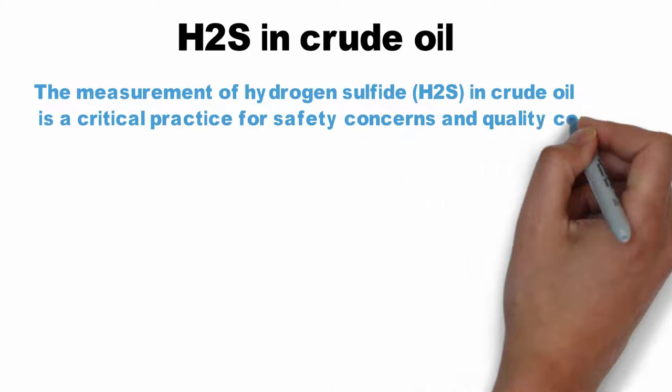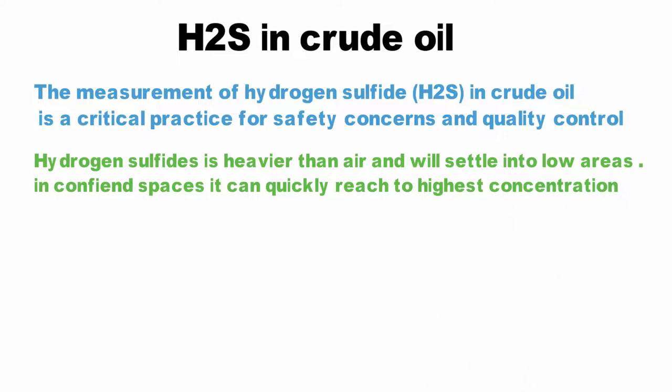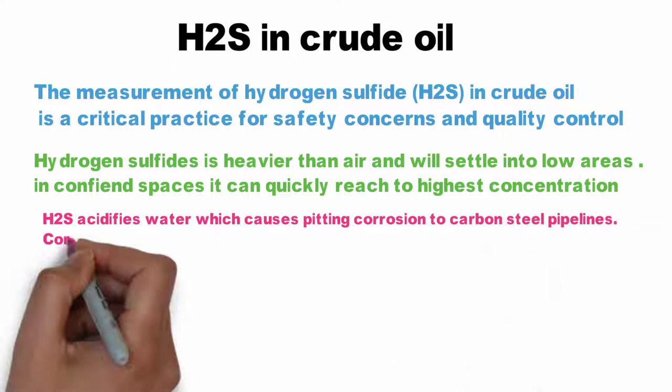In a confined space, it can quickly reach the highest concentrations. H2S acidifies water, which causes pitting corrosion to carbon steel pipelines. The corrosion reaction increases fast when it combines with oxygen and carbon dioxide.